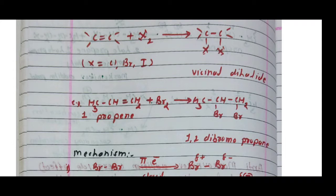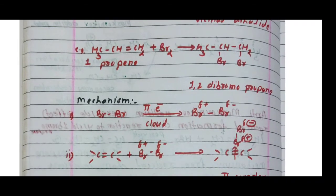One-propene reacts with bromine to form CH₃-CHBr-CH₂Br: carbon atom number one attaches one bromine atom and carbon atom number two attaches another bromine, giving 1,2-dibromopropane. So alkene reacts with halogen to form a vicinal dihalide — this is the halogenation of alkene. We will now study the mechanism of halogenation.